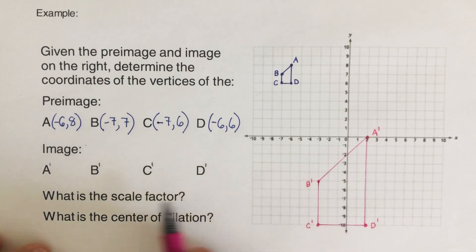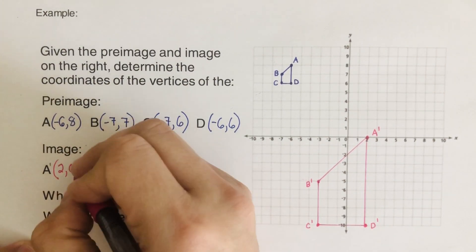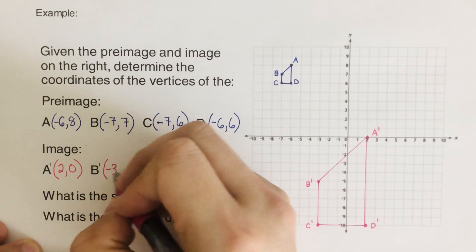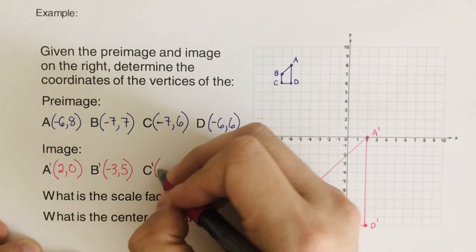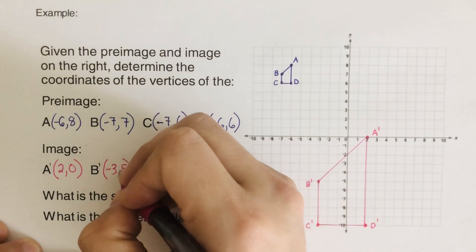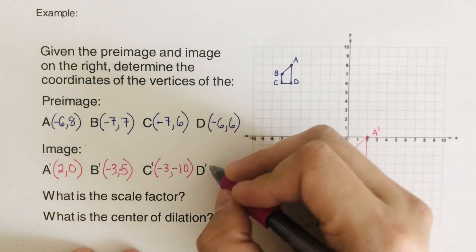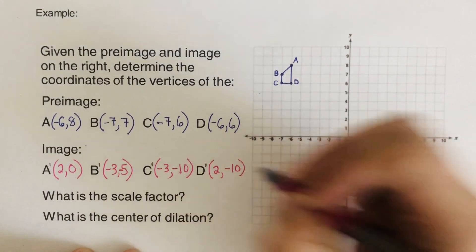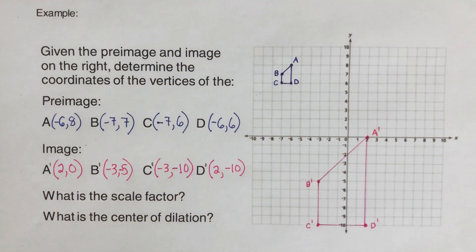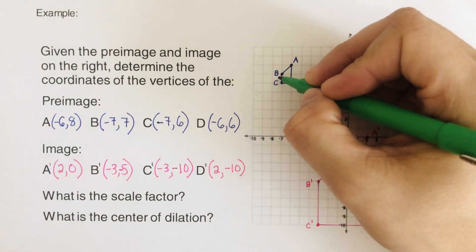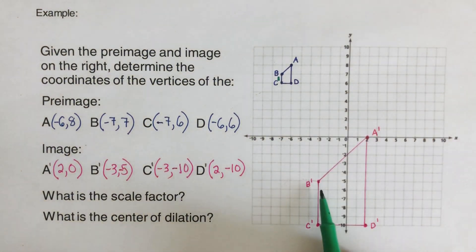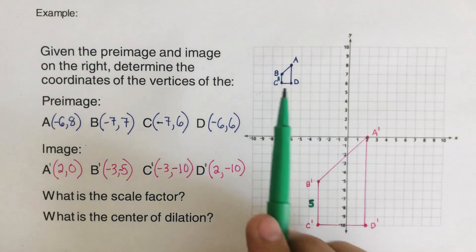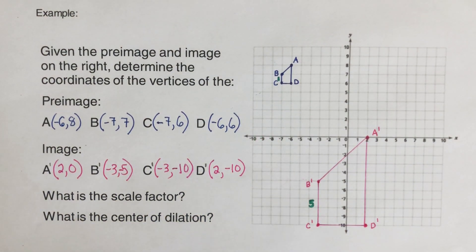Now we look at the image coordinates: A prime is (2,0), B prime is (-3,5), C prime is (-3,-5), and D prime is (2,-10). We are asked for the scale factor. One side of the pre-image is 1 unit, and the corresponding side of the image is 5 units. So the number multiplied to get from 1 to 5 — the scale factor — is 5.